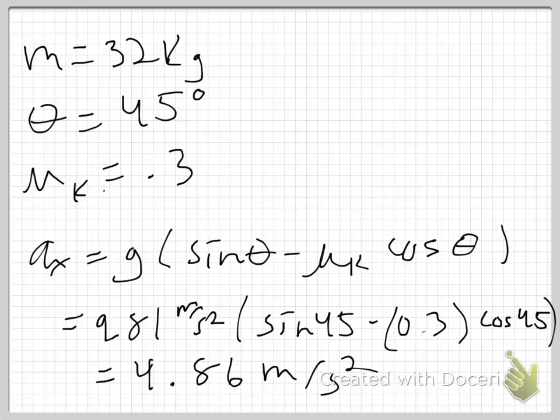I know that if this were not inclined, then the acceleration would be 0. And if it were inclined all the way so that it were vertical, this would just be in free fall, and my acceleration would be 9.81 meters per second squared. So I expect to find a value in between there.